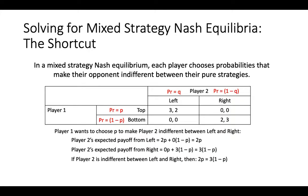And player 2's expected payoff from playing right is 3 times the quantity 1-p. Indifference implies that player 2's expected payoffs from these two pure strategies must be equal in order for player 2 to be willing to play a mixed strategy in equilibrium. Solving for p results in a solution of p equal to 3 fifths, the same solution we found before for player 1's mixed strategy.